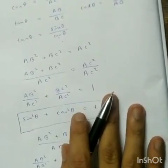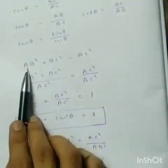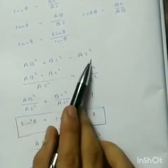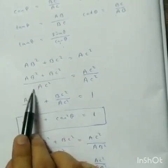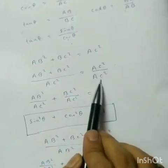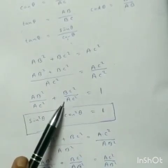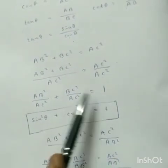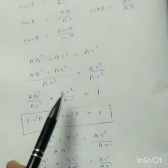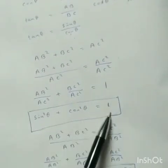Now let us review what we have covered. We know that AB squared plus BC squared equals AC squared. Dividing both sides by AC squared, we get AB squared over AC squared plus BC squared over AC squared equals 1. Since AB by AC equals sin theta and BC by AC equals cos theta, we get sin squared theta plus cos squared theta equals 1.